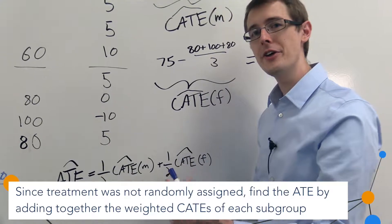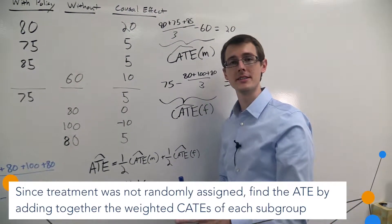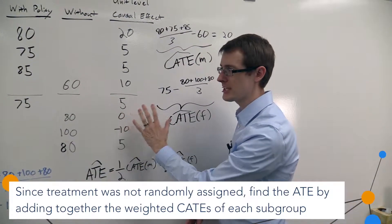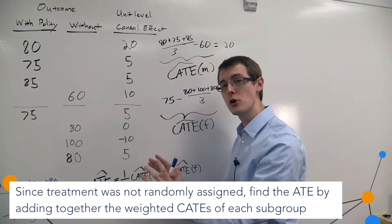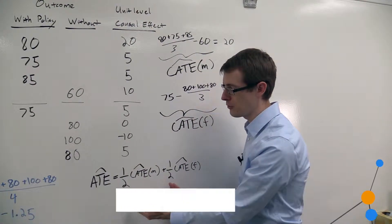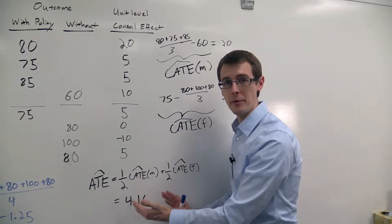So that's what you're going to do when you get your data and you make the unconfoundedness assumption. Do your analysis just like in a randomized experiment, but within each group, and then combine the groups at the end to get your overall average treatment effect.